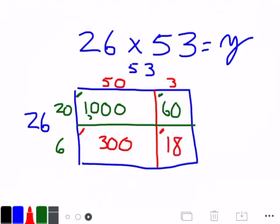Now I add everything up. 1,000 plus 300 is 1,300. 1,300 plus 60 is 1,360. 1,360 plus 18 is 1,378.